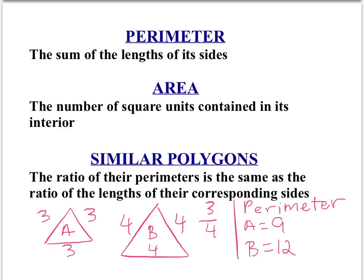Now, that ratio is 9 over 12. Simplified — divide both by 3 — that gives us 3 over 4. So I've proved that the ratio of the perimeters is the same as the ratio of the lengths of the corresponding sides.